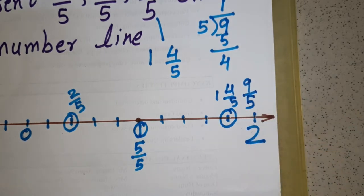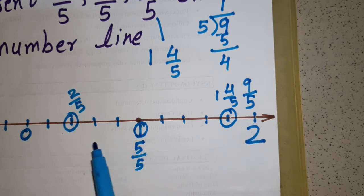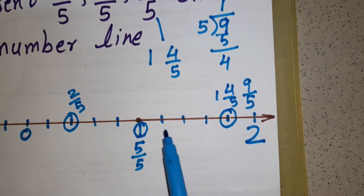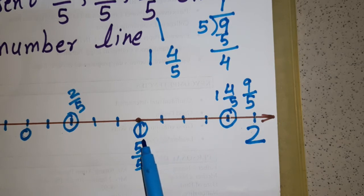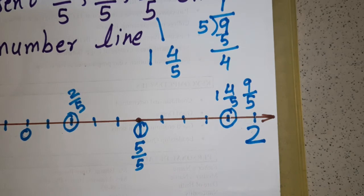Children, do practice similar types of questions from your textbook. Now let us understand further. As we have seen between 1 and 2, we can find so many rational numbers — we represented 5 rational numbers between 1 and 2. Now let us understand how many rational numbers can be found between any two rational numbers.